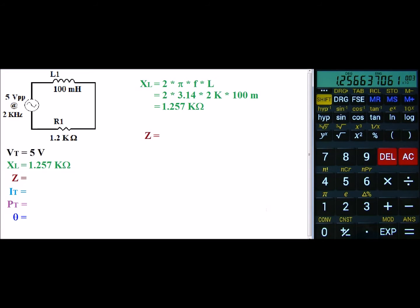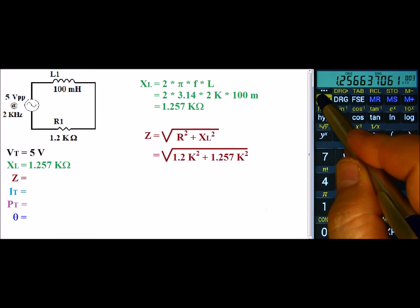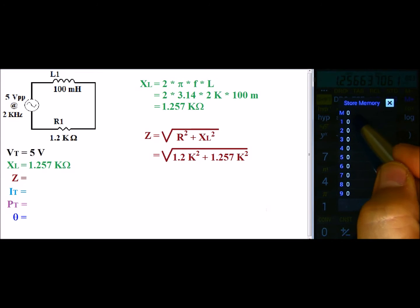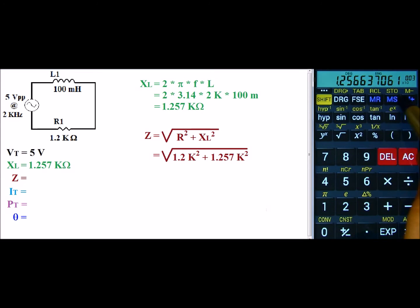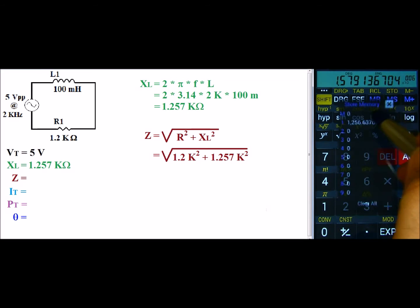And Z can be found by the square root of R squared plus X of L squared. So for this circuit, it would be 1.2k squared plus 1.257k squared. Now I had the inductive reactance already left from the previous calculation, so we'll go ahead and store that value. And now I'll go ahead and square it. So we have 1.579 meg, and I'll go ahead and store that value as well.